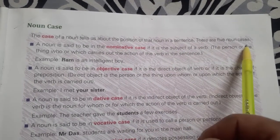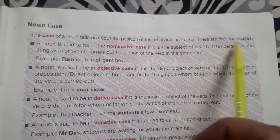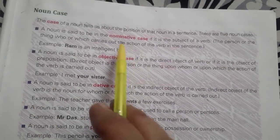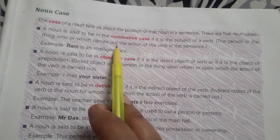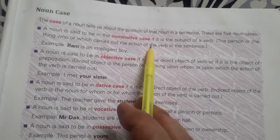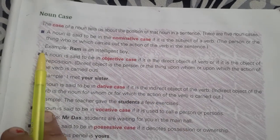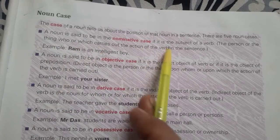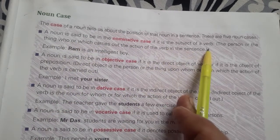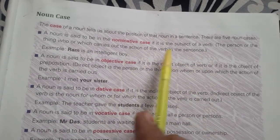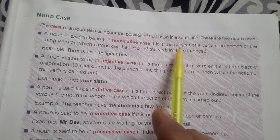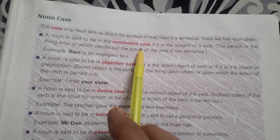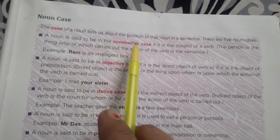There are five noun cases. The first is the nominative case. A noun is said to be in a nominative case if it is the subject of a verb — if it is the subject of a verb, then the noun is said to be in a nominative case.